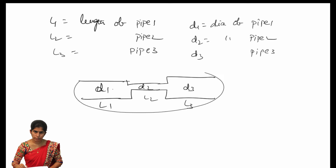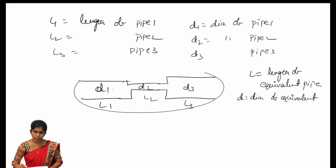We consider L as the length of the equivalent pipe and D as the diameter of the equivalent pipe. The total length of the equivalent pipe should be equal to the sum of all individual lengths, so L is equal to L1 plus L2 plus L3.